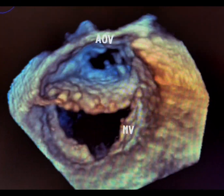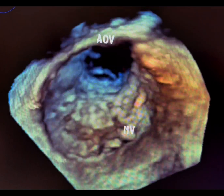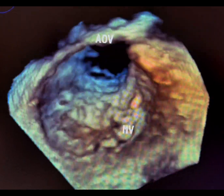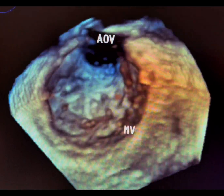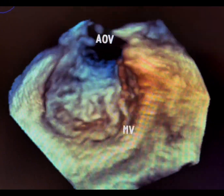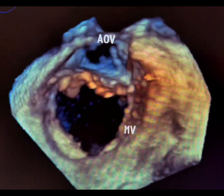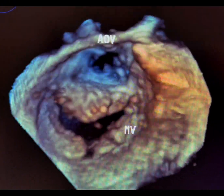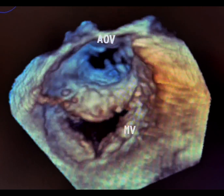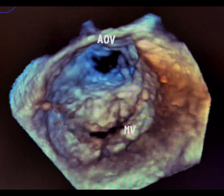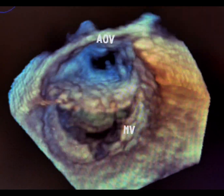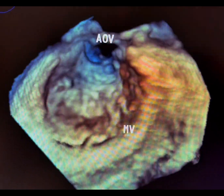In terms of managing secondary MR, the primary focus should always be on treating the left ventricle first. If MR persists despite optimal therapy, then you can consider a valve-specific intervention.